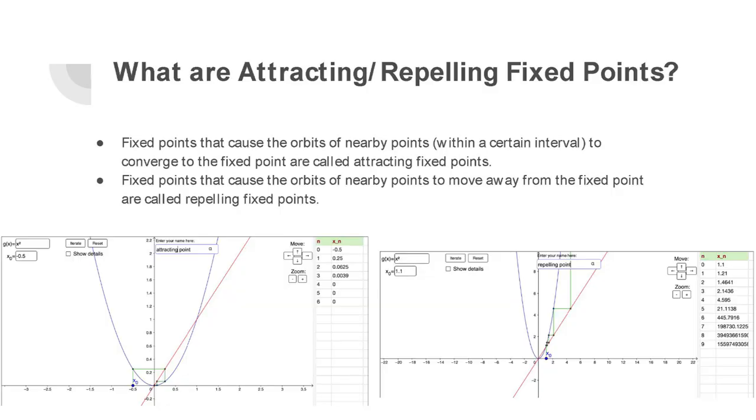In general, there are three different kinds of fixed points: attracting, repelling, and neutral. The main two are attracting and repelling, and those are the ones we look at for the behavior of iterative functions as we iterate them.